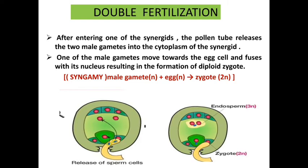This process is named syngamy. In syngamy, the male gamete fuses with the egg cell to form a diploid zygote. After the pollen tube enters the synergid, two male gametes are released into the synergid's cytoplasm. One of the male gametes fuses with the egg cell, resulting in the formation of the zygote. This process is known as syngamy.